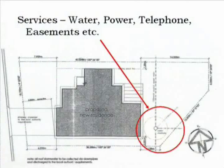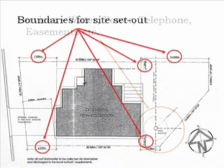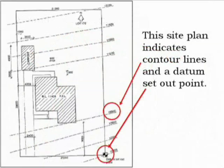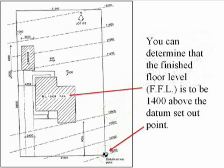Some of the services that can be included on a site plan include water access, power, telephone, and easements. Site plans also contain set-out points for boundaries, so the builder can do a site set-out for foundations and construction. Site plans often contain contour lines and a set-out datum point — this information is critical when setting out for construction on sloping blocks. For instance, on the site plan we see the reduced level as 11,400, which is 1,400 above the datum point. The finished floor level would be 1 metre and 400 millimetres above the datum. The datum is a point of reference used as a comparison to take measurements from. Your trainer can provide more information on datums and contour lines later.